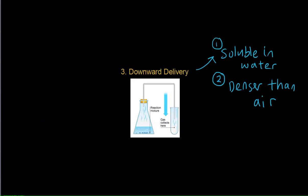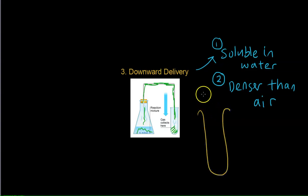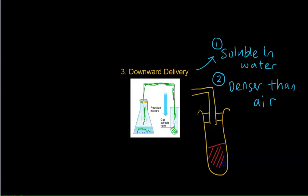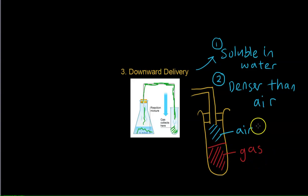Let's look at the reaction setup. You can see that the reaction happens here. Gaseous products are formed, travel along this delivery tube, and go into this test tube here, where they are collected at the bottom portion. In the downward delivery test tube, let's break it into two portions: the bottom layer and the top layer. The top layer will be air, and the bottom layer will be the gas that we want. This is because the gas is denser than the air, and hence it sinks to the bottom. So for gases like this, you have to collect them using the downward delivery method, because they sink to the bottom and you can collect them easily there.